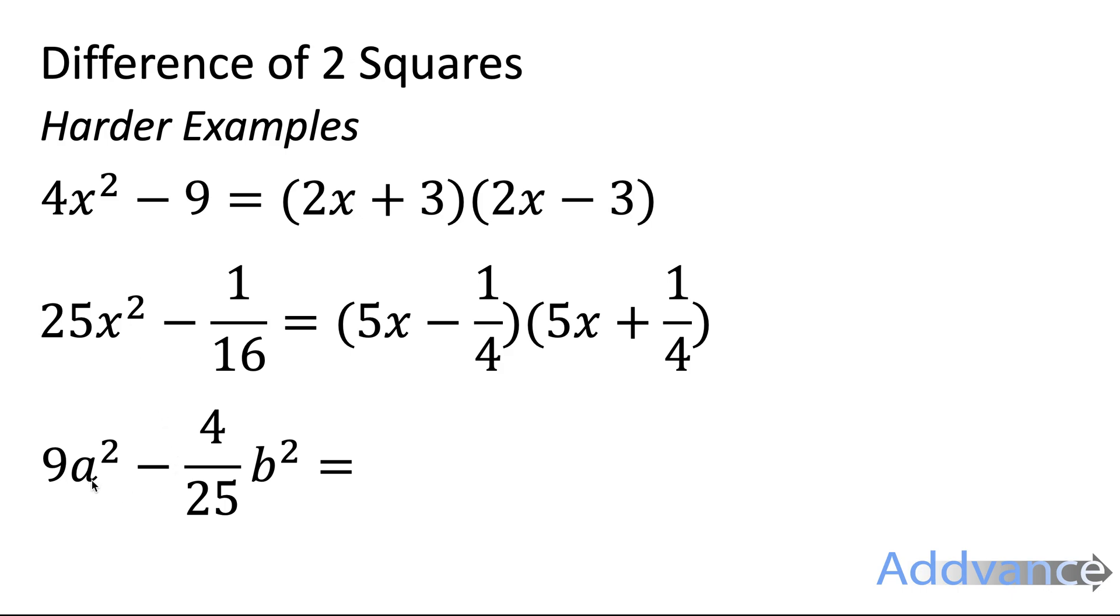For the bottom one, 9a squared. That square roots to 3a. And 4 over 25b squared will become 2 over 5b. And again just look at those fractions. They can be quite interesting. So the square root of 1 over 16 is square root of the top and the bottom of the fraction, and you get 1 quarter. The square root of 4 over 25b squared is 2 fifths b because we square root the top and the bottom of the fraction. Those are harder examples and they will be pushing you at GCSE level.